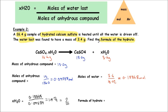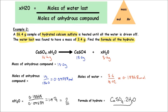This is where you could lose a mark if you're not careful, because the question isn't just asking you for 2 — it's asking for the formula of the hydrate. So the formula of the hydrate is CaSO₄ · 2H₂O. Remember, that dot tells us it's the water of crystallization. That is the final answer.